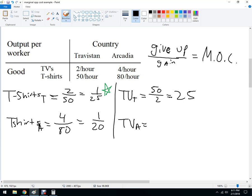And then over here, we're going to give up 80 T-shirts. We'll get four TVs. This is 20. And so Arcadia has the lower opportunity cost when producing television.